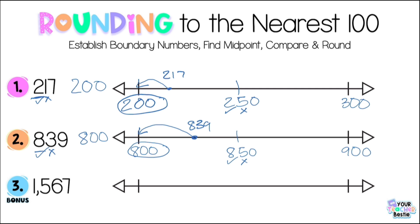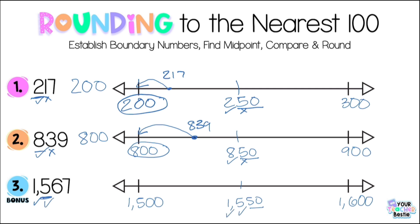Alright, it's bestie bonus time! We have a four-digit number: 1567, and we're going to round it to the nearest hundred. Make sure you pause the video and challenge yourself first! We follow the same three steps: underline the hundreds place, which is the 5. Step one: boundary numbers — 1567 lives between 1500 and 1600. Step two: midpoint — 1550. Notice the pattern: always ends in 50! Step three: compare — is 1000 and 1000 equivalent? Yes. 500 and 500? Yes. What about six tens and five tens? Six tens is greater than five tens, so we round up to 1600. So 1567 is closer to 1600.